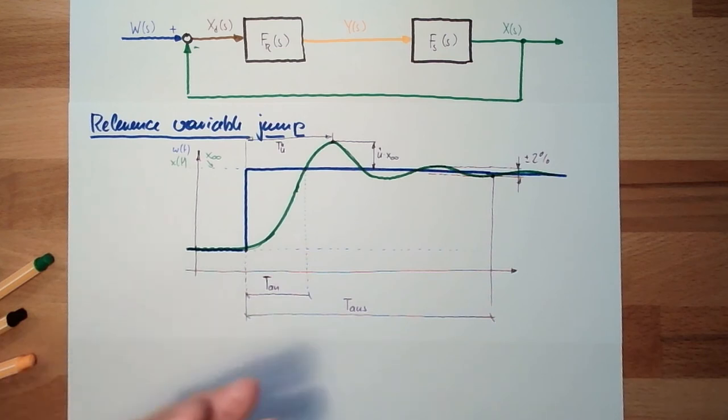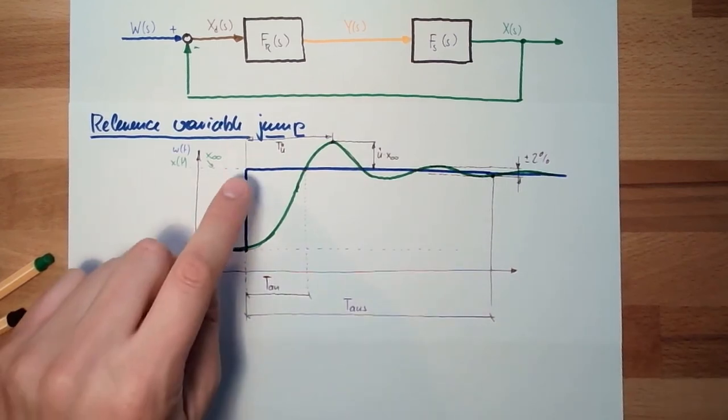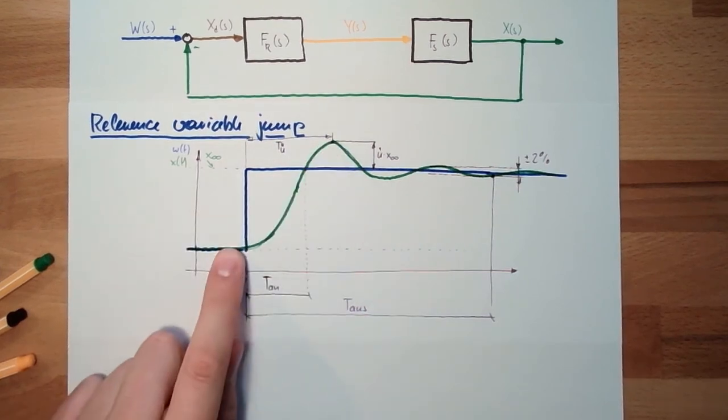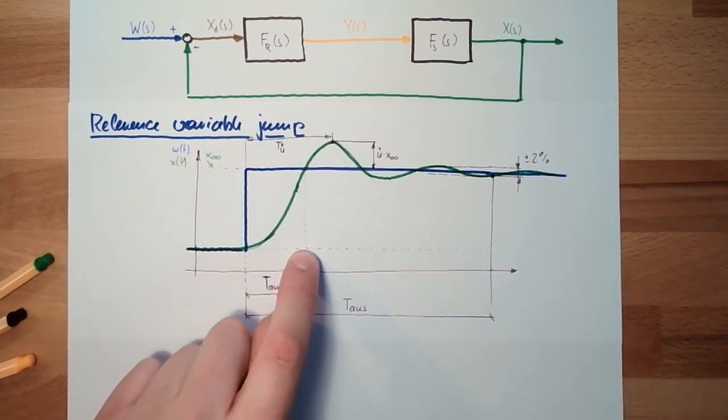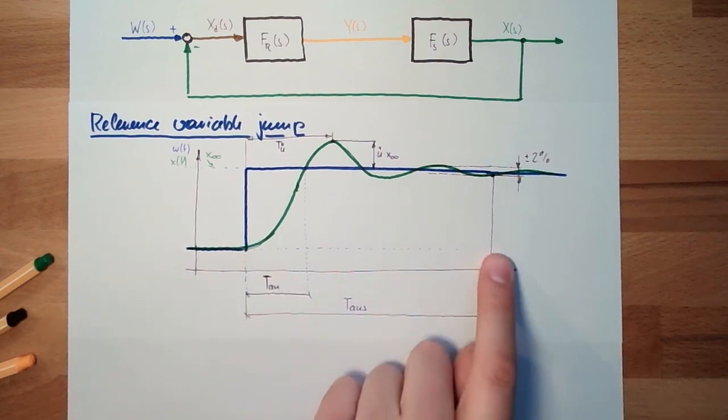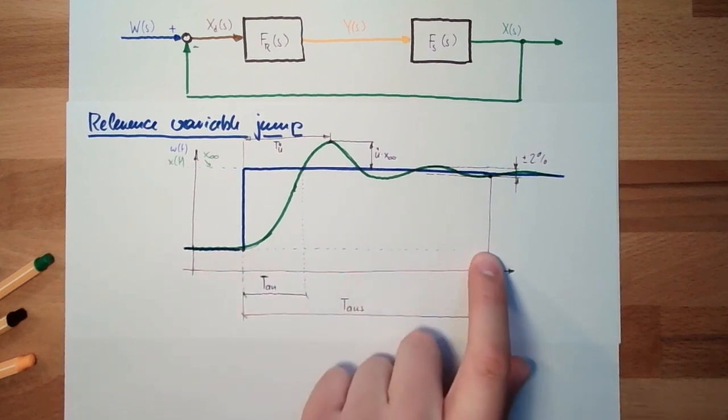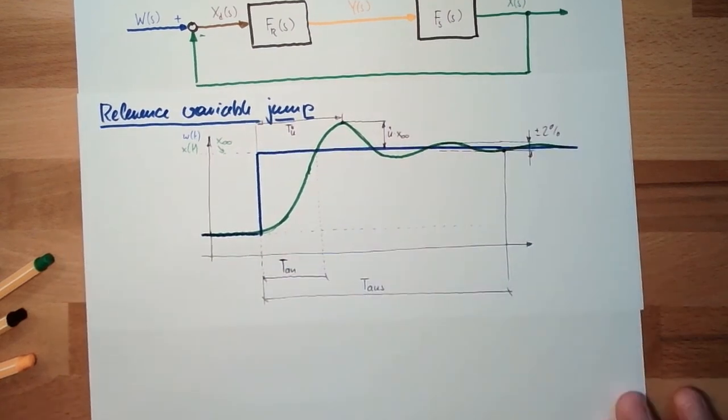These are the characteristic parameters. So the characteristic parameters: overswing time, overswing value, rise time Anregelzeit, Ausregelzeit settling time until we are within a certain bandwidth.